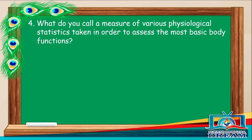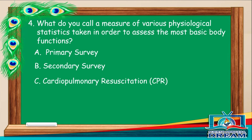What do you call a measure of various physiological statistics taken in order to assess the most basic body functions? A. Primary survey. B. Secondary survey. C. Cardiopulmonary resuscitation. D. Vital signs.